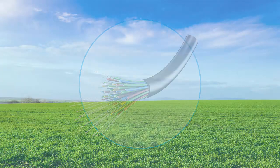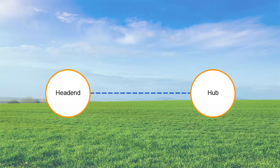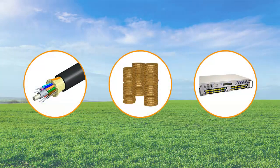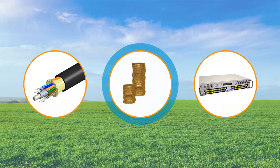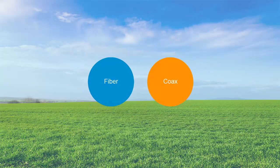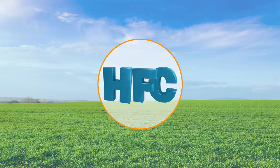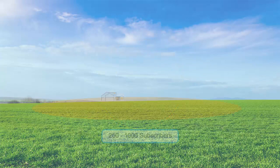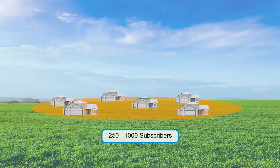The first application was for super trunking between head ends and hubs, where fiber trunks eliminated the need for failure-prone electronic amplifiers. As improved fiber manufacturing technology decreased fiber attenuation, the benefits of lower-cost fiber and signal distribution over greater distances without amplifier cascades drove the replacement of coax with fiber further into the network. The result was a hybrid fiber coax, or HFC architecture, where signals are transported optically from the head end to fiber nodes that typically serve 250 to 1000 subscribers each.